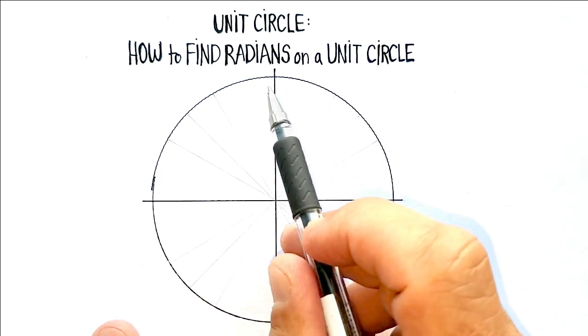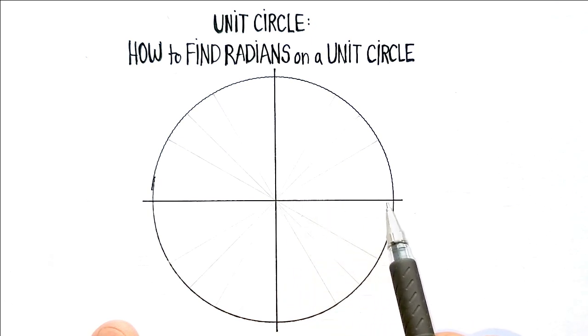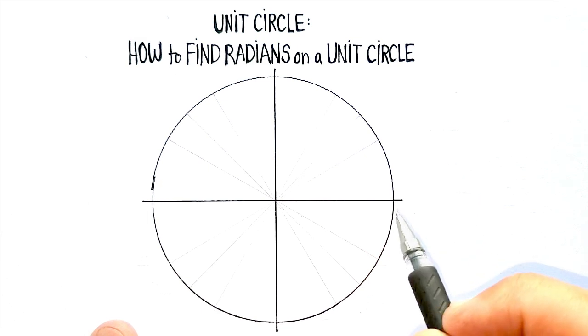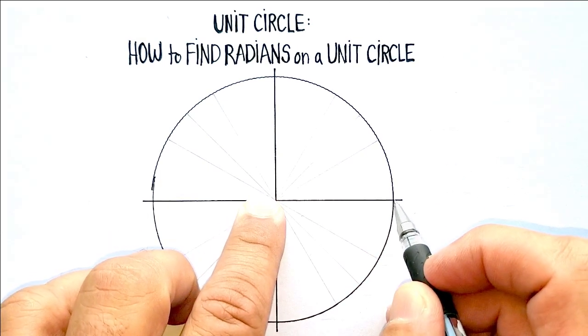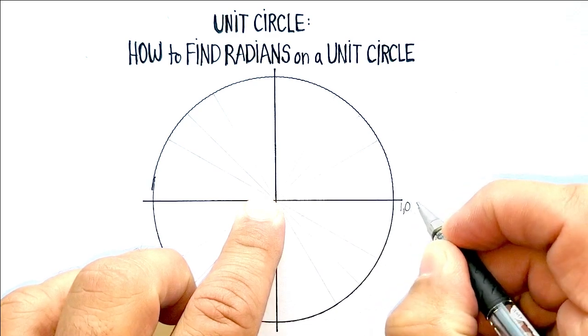Remember that a unit circle is a circle that has a radius of exactly 1. So the coordinate here would be 1, 0.